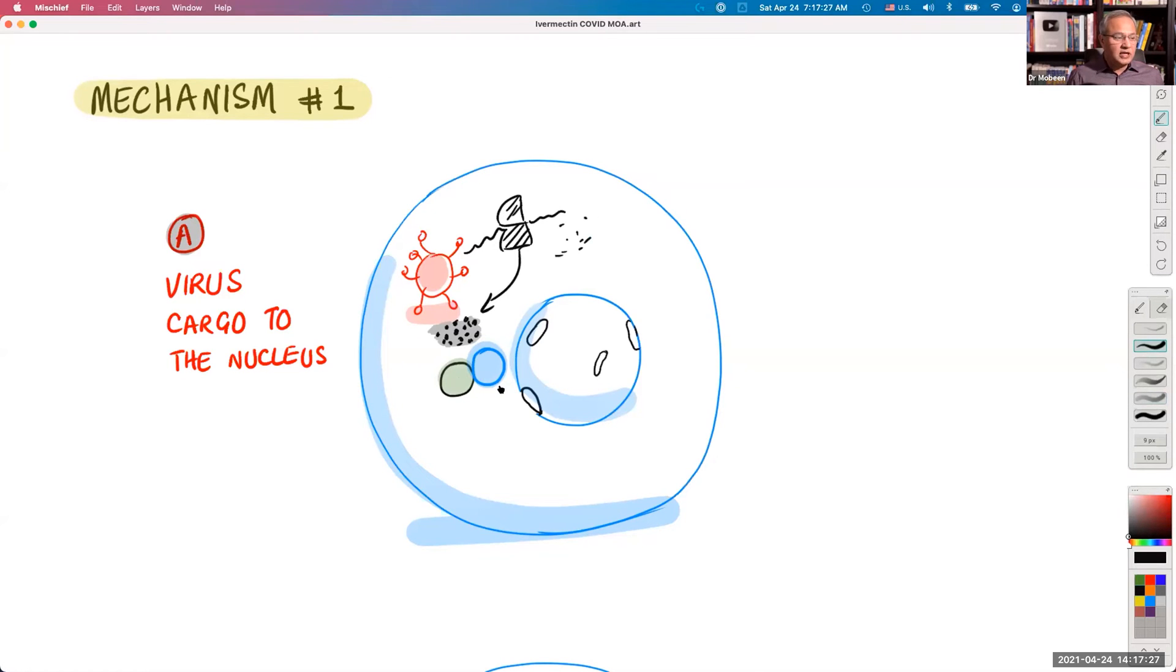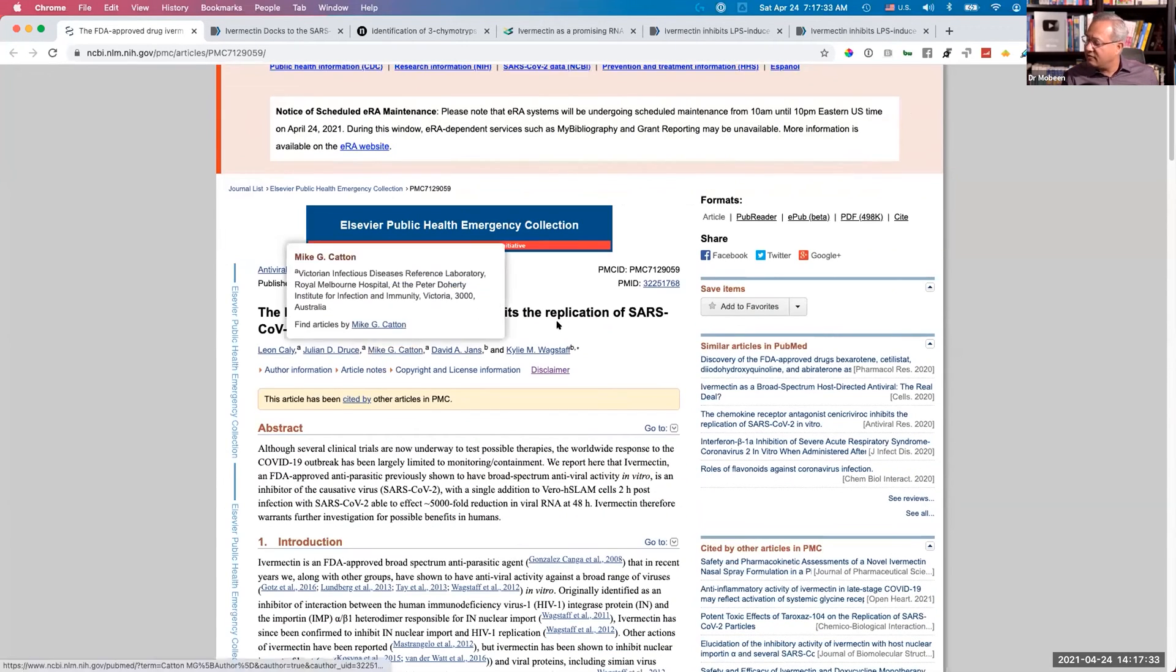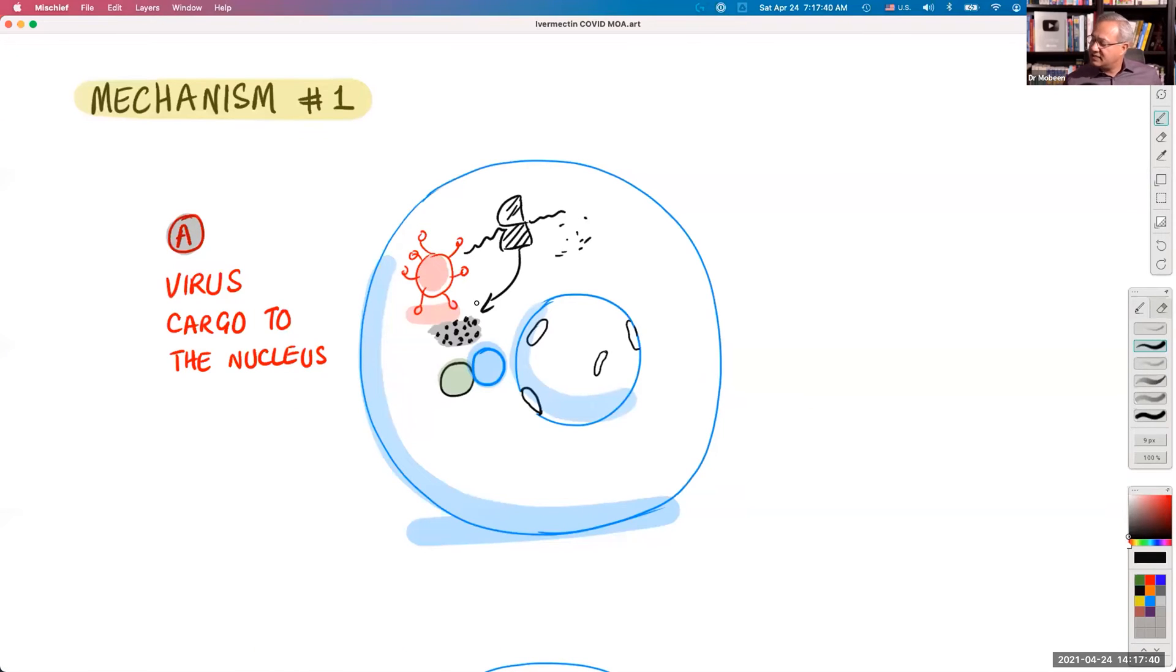And the reference for this one is the Kelly's discussion here. So the FDA approved drug ivermectin inhibits the replication of SARS-CoV-2 in vitro. Here is the mechanism that I'm discussing. What happens is this cargo of the virus, it connects with our proteins called importin alpha and beta. And then it goes through these importin alpha and beta with the virus cargo. They go through the nuclear pore complex.